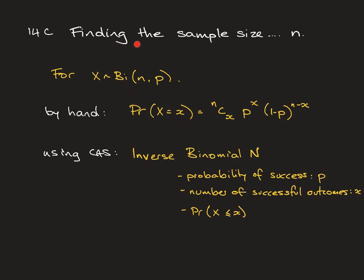In this video, we're going to look at finding the sample size, or the number of trials necessary to meet a particular condition. For a binomial random variable with n and p, what we're going to use if calculating by hand is the probability equation. If we have our CAS on hand, we're going to use the inverse binomial n function. To do that, we need to know the probability of success p, the number of successful outcomes we require, and our probability in the form of less than or equal to the number of successful outcomes. Probably the easiest way to do this is through an example.